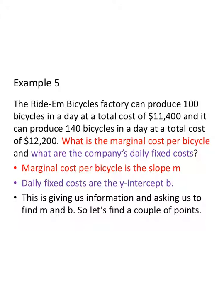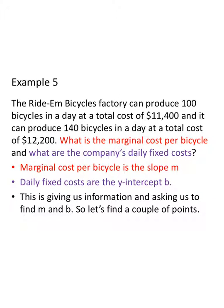So the Ride-Em Bicycles Factory can produce 100 bicycles in a day at a total cost of $11,400, and it can produce 140 bicycles in a day at a total cost of $12,200. Now, first of all, I read through that and there's a lot of numbers coming at me, and so I kind of fade out. But I go to the last sentence or question. What is the marginal cost per bicycle? Translation, find M. And what are the company's daily fixed costs? That's just B. Fixed cost B, marginal cost M. So all of this information is just asking us to find M and B.